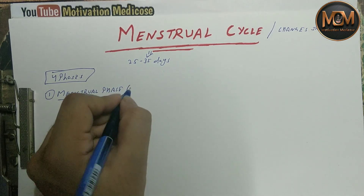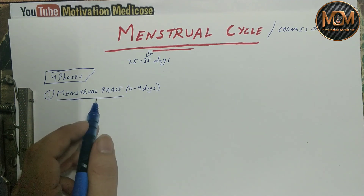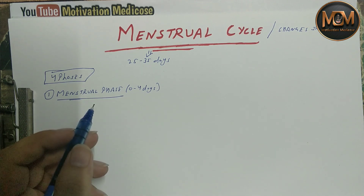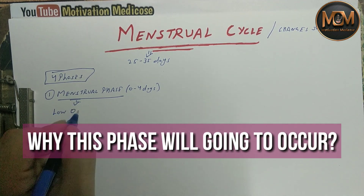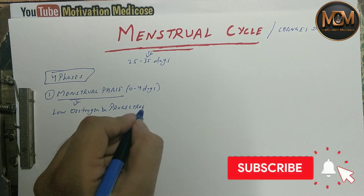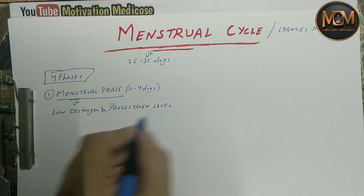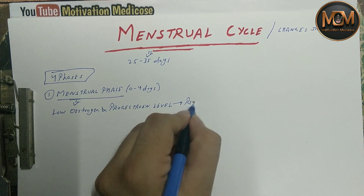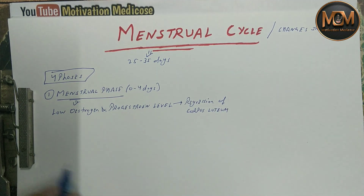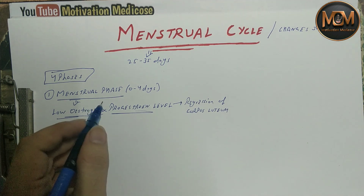The menstrual phase lasts from day zero to four days, or on average three to five days. This phase occurs when the ovum after ovulation is not fertilized, so menstruation will occur. It happens because of low estrogen and progesterone levels, which are low due to regression of the corpus luteum. So, because of low progesterone and estrogen caused by regression of the corpus luteum, this menstrual phase occurs.